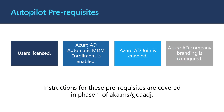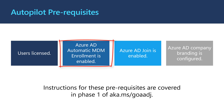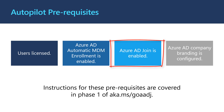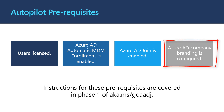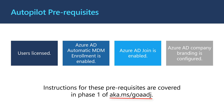Before we get started, Autopilot does have some prerequisites. If you're already enrolling Windows devices, then you probably already have these covered. First, we need our users to be licensed for Intune and Azure Active Directory. Second, we need Azure Active Directory automatic MDM enrollment to be enabled. Third, we need users to be allowed to join Azure Active Directory. Finally, we need Azure Active Directory company branding to be configured. This enables your logo to appear on the Azure AD and Windows Autopilot sign-in pages. For instructions on how to check these settings or configure them, you can find information in phase one of our cloud-native Windows endpoint guide, available at aka.ms/goaadj.